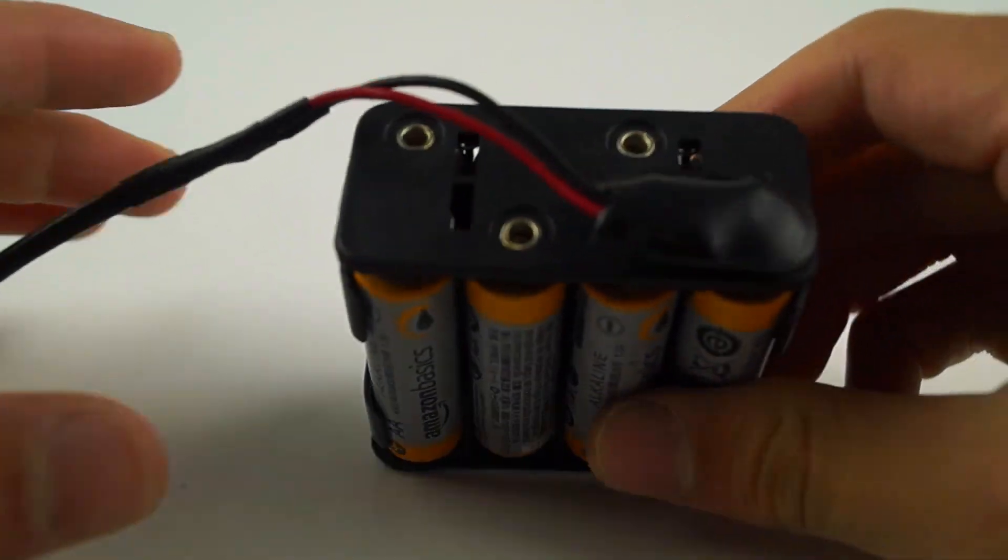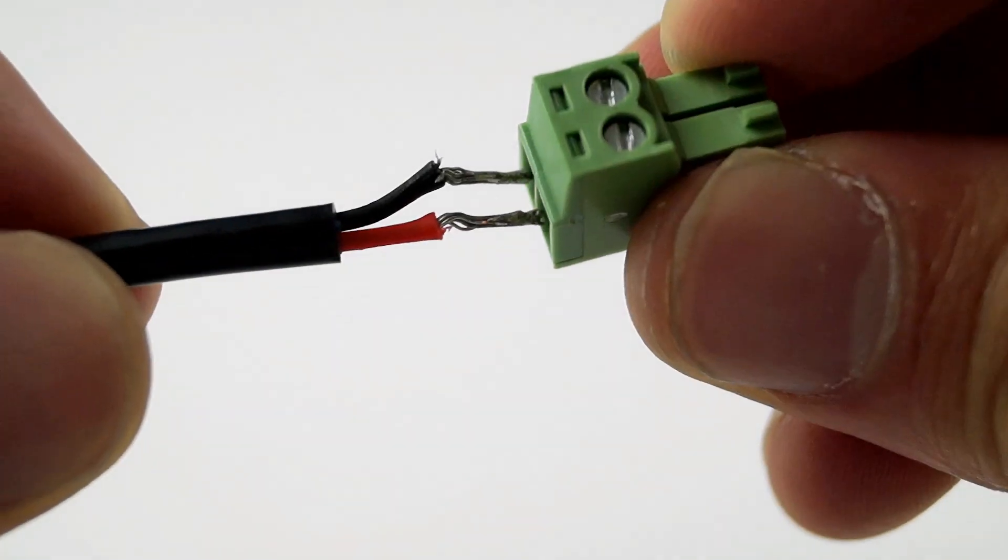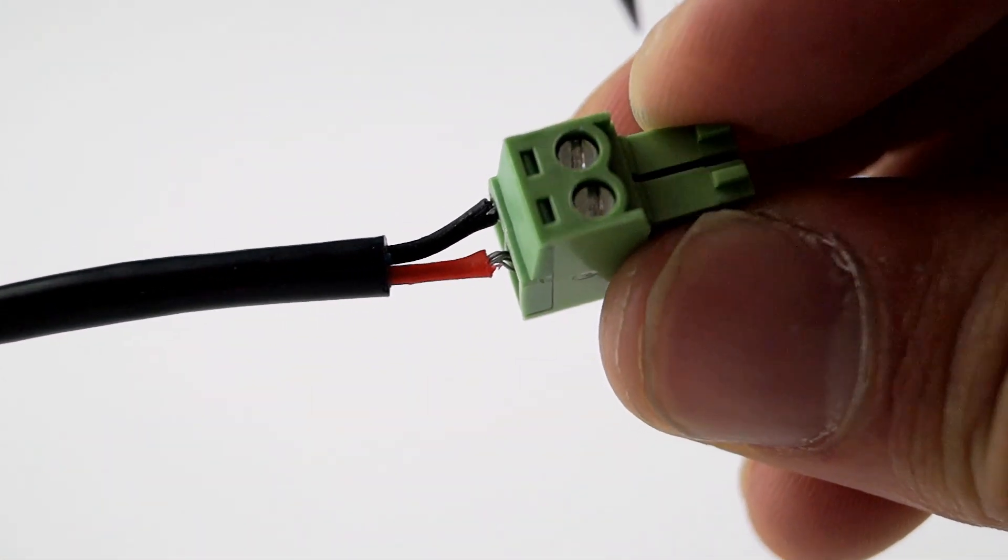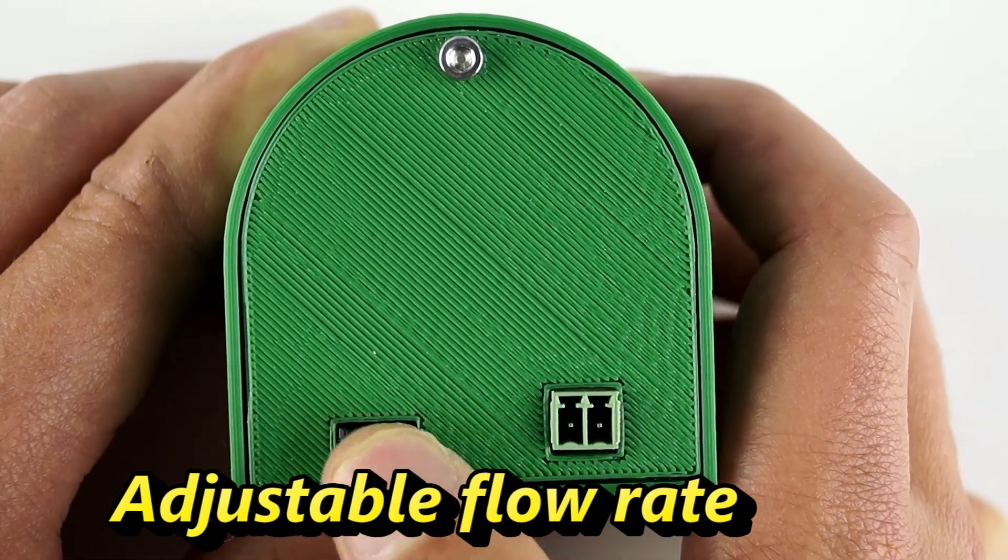To set up a pump, you will need to connect your 12 volt power supply. Be sure to put the ground wire in the left slot and the positive wire in the right slot. You are now ready to configure your pump to fit your needs.